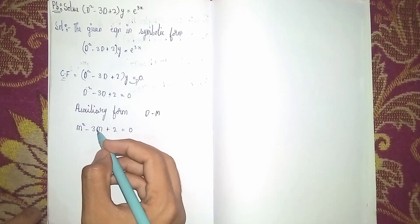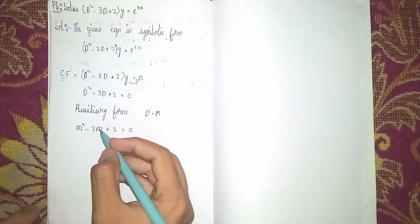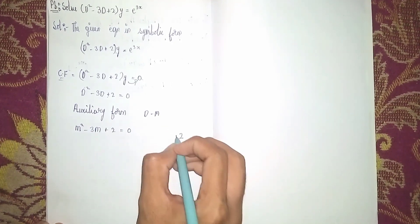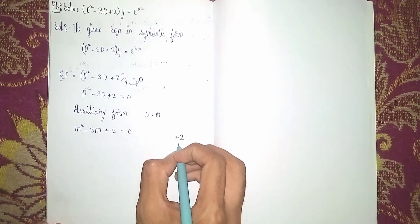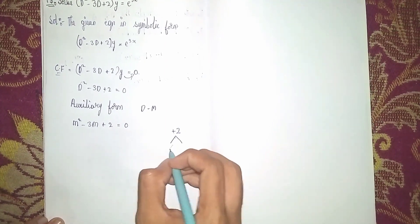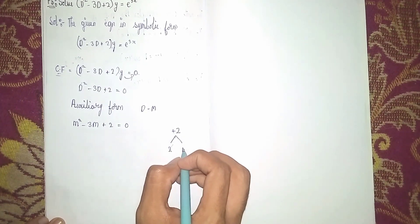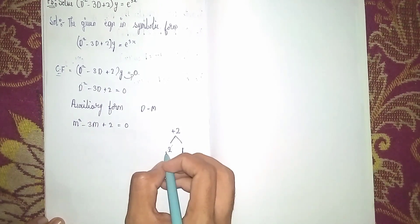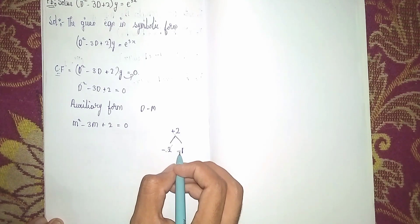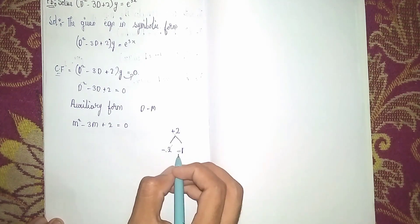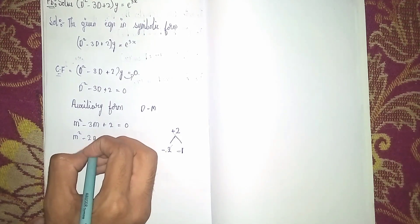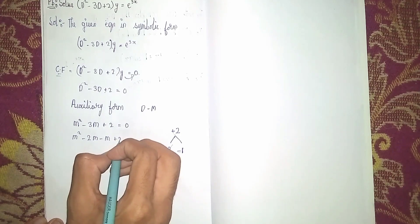Now we have to find the factors using the middle term splitting method. The first term and last term multiply to give 2. We need two factors of +2 that add to -3, which are -2 and -1. So it becomes: m² - 2m - m + 2 = 0.